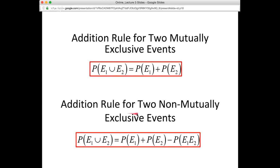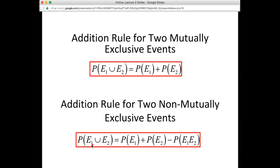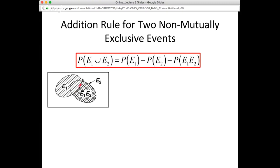It gets more complicated for non-mutually exclusive events — events which have some intersection. If we just summed the probabilities of E1 and E2, we'd have too much probability because we've double-counted their intersection. The probability of E1 is represented by one ellipse, E2 by another ellipse, and if we sum those areas, we count the overlapping intersection area twice. That's why we have to subtract off that intersection piece.